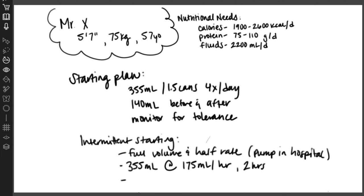That will take Mr. X about two hours to do an intermittent feeding. After that first feeding, Mr. X tolerated that well. For his subsequent feedings while he's here, we are going to run his feedings with that 355 milliliters at 355 milliliters an hour to mimic the speed of a syringe or gravity bag feeding.